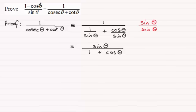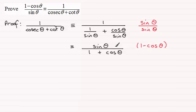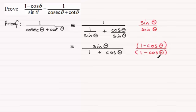Looking at the top of the left hand side, I need to get 1 minus cosine theta, so I'm going to force that into the numerator. I'll multiply the top by 1 minus cosine theta, and obviously I must multiply the bottom by 1 minus cosine theta as well, so that we're multiplying top and bottom by the same value — in other words by one. On the top I'll write sine theta multiplied by 1 minus cosine theta.